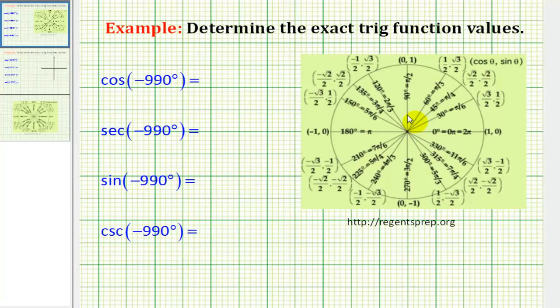So what we need to do is determine where negative 990 degrees will intersect the unit circle, and then we can use that point to determine these four trig function values.